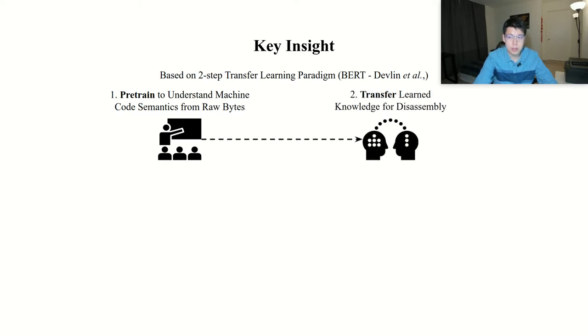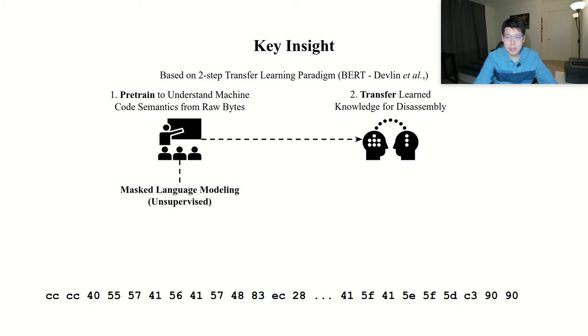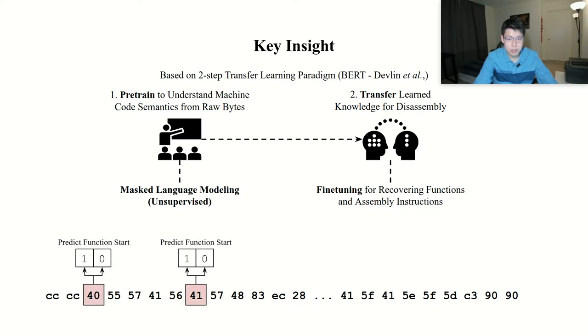Our key insight is to teach the ML model general dependencies between bytes in machine code before training it to perform specific disassembly tasks. Intuitively, we first teach our model to read and gain a basic understanding of machine code and then transfer the learned knowledge to solve a disassembly task. Specifically, consider the following sequence of bytes. In the first stage, we pre-train our model using masked language modeling to teach it the byte dependencies. The masked language modeling task asks the model to predict randomly masked bytes, which requires the model to produce missing bytes given the context. In the second stage, we fine-tune our model to leverage its learned knowledge of byte dependencies to solve a specific disassembly task, such as predicting function start and function end.